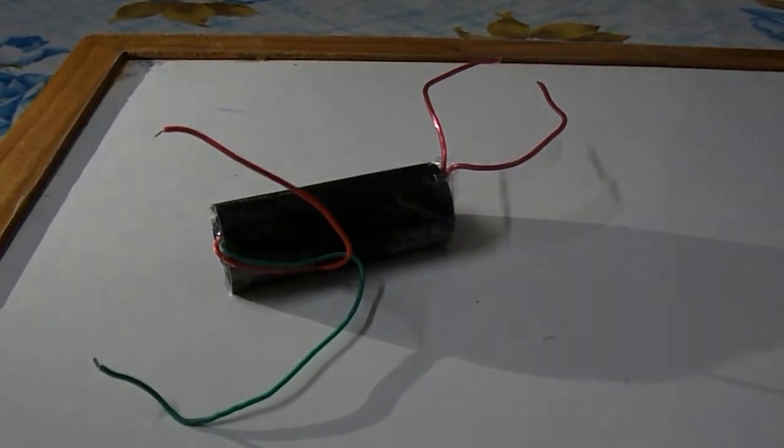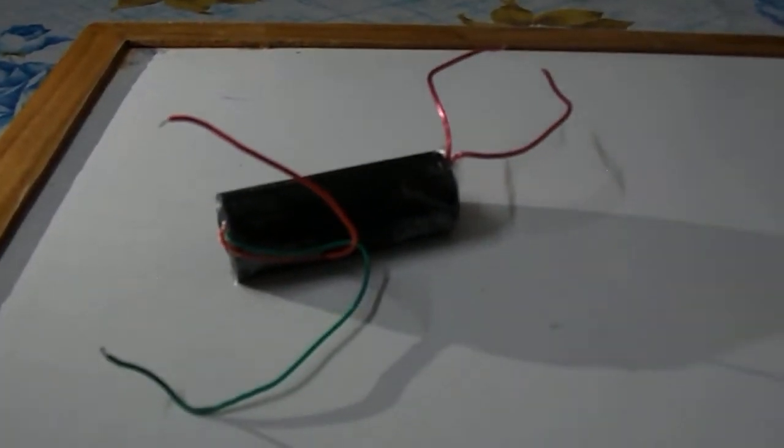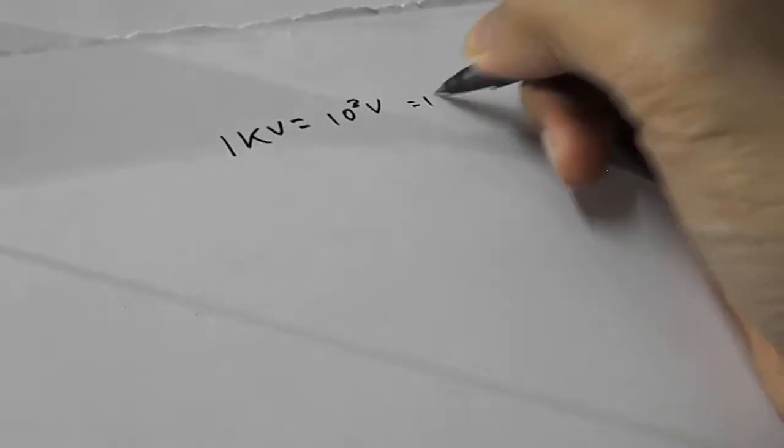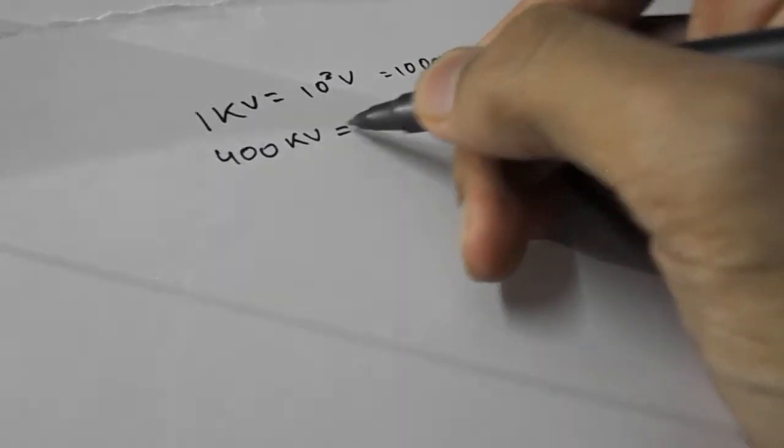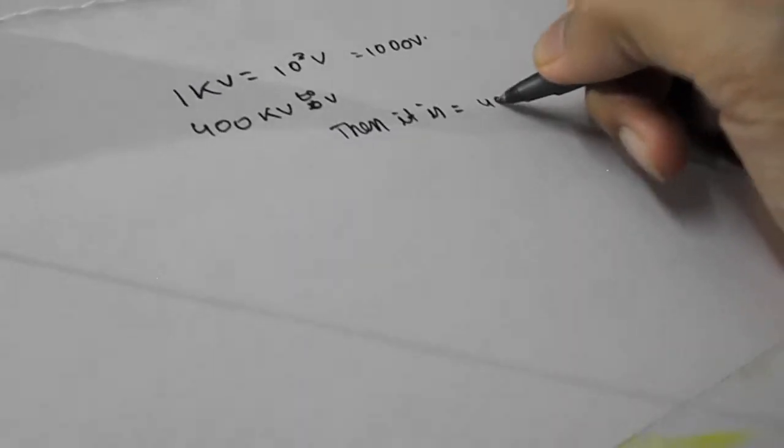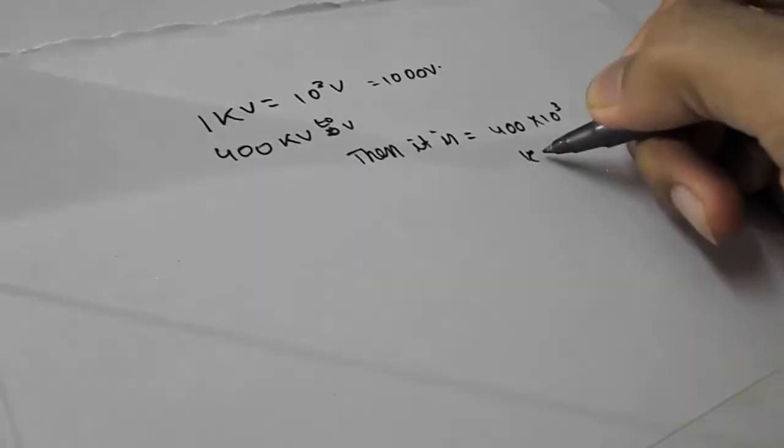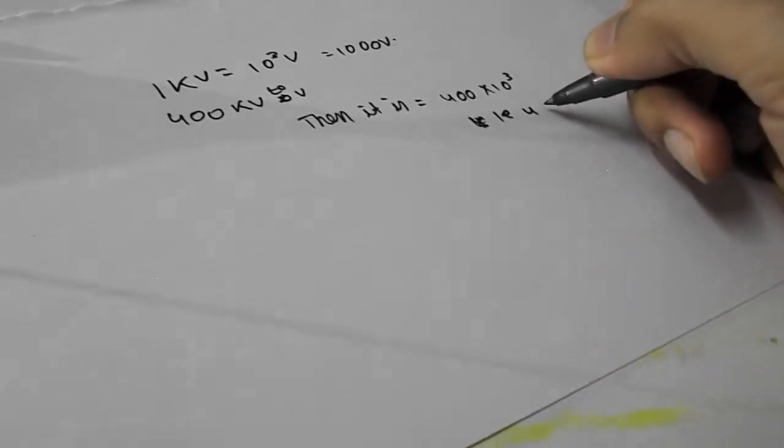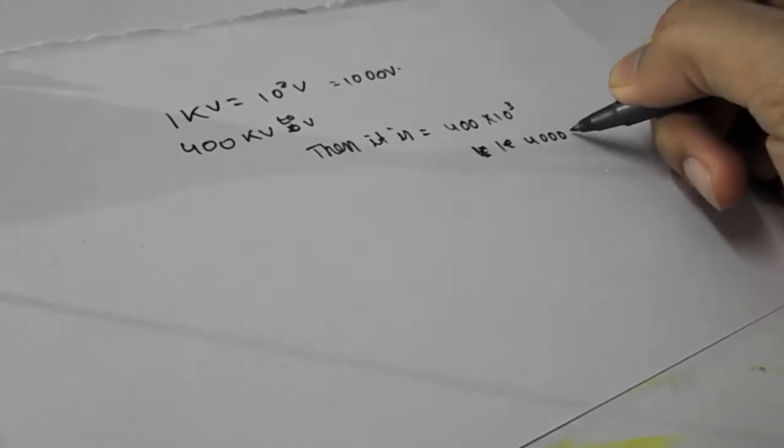This converter can convert 3 volts or 6 volts to a very high voltage that is 400 kilovolts, which means 1 kilovolt contains equal to 10 cube volts which means 1000 volts. So if I convert 400 kilovolts to volts then it will give 400 into 10 cube that is 400,000 volts.